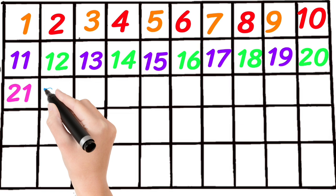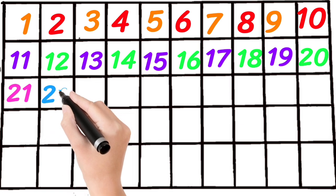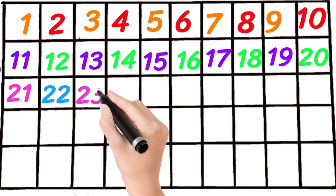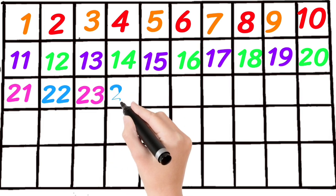Two, two, twenty-two. Two, three, twenty-three. Two, four, twenty-four.